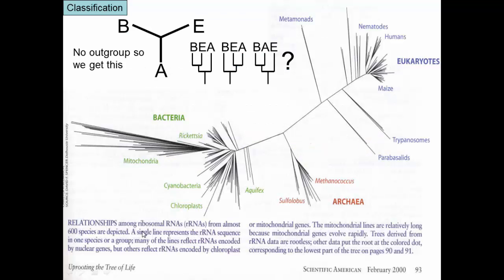When we took ribosomal RNA — RNA that everything uses, since all living things have ribosomes — and sequenced the ribosomal RNA sequences from basically everything, about 600 different species, we get a relationship where bacteria are mostly in one big group. Kind of surprisingly, archaea were in their own separate group.